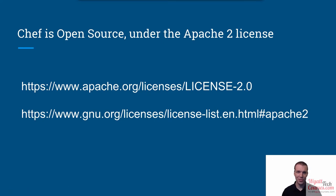Chef is open source under the free software Apache 2 license. The Apache 2 license is pretty simple. You can use Apache 2 code to make closed source software that you can distribute freely, but you need to include a reference in the EULA, or otherwise the license agreement. If you share the source code files, not the binary, outside your organization, then you need to release the modified code under the Apache 2 license.